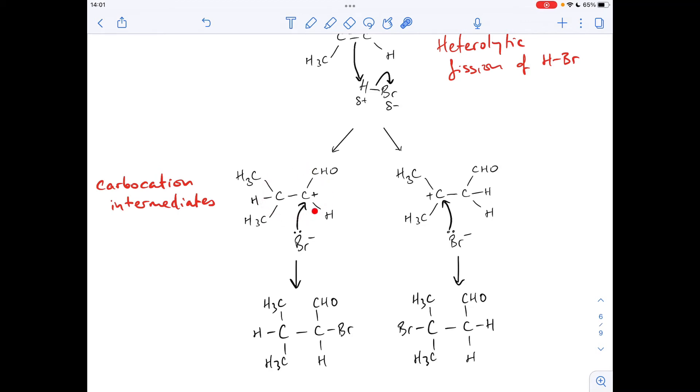So this one here on the left, what type of carbocation intermediate is it? Well, we look at the C with the positive charge, just highlight that. So we're looking at how many carbon groups are bonded directly to this carbon. One, two. So this is a secondary carbocation intermediate.